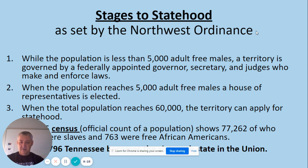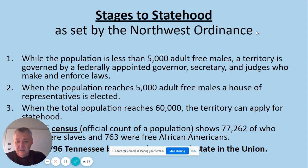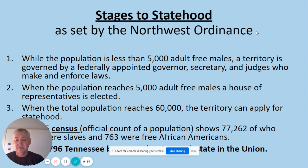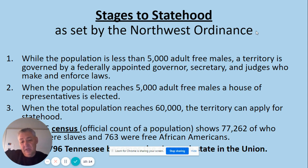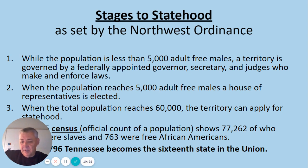Stages of statehood: A territory needed 5,000 adult free males and was governed by a federally appointed governor, secretary, and judges. When the population reached 5,000, a House of Representatives was elected. When the total population — men, women, children, and slaves — reached 60,000, a territory could apply for statehood. Our census showed 77,000 people, including 10,000 slaves and 763 free African Americans. Those free African Americans who were 21-year-old males owning 200 acres could vote — though that right would later be taken away. On June 1, 1796, Tennessee became the 16th state of the union.